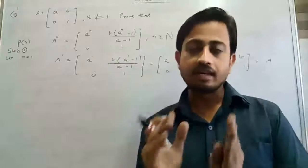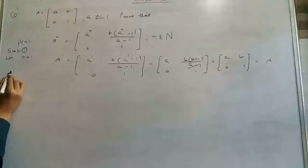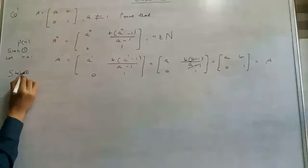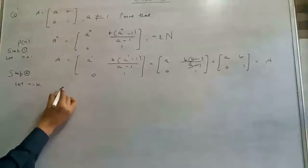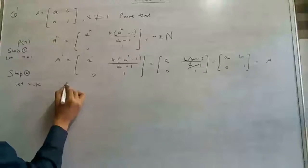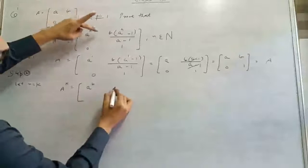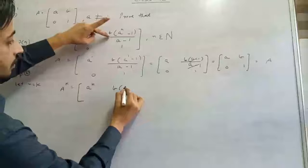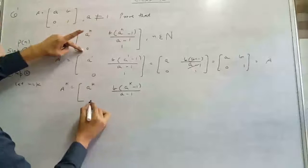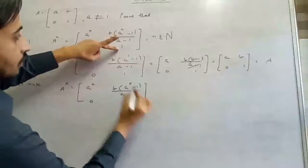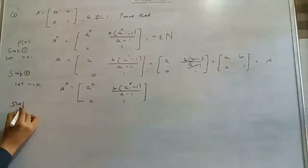Step 2: put n equal to k. We assume A^k equals A^k, B(A^k minus 1)/(A minus 1), 0, 1. This is our assumption. Now we follow Step 3.